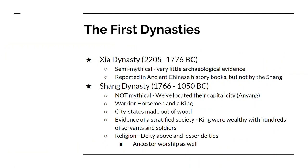Chinese history is typically told in dynasties, so I'm going to go over a couple of the major dynasties. The first is the Xia, and the Xia are traditionally dated from 2205 to 1776. They're semi-mythical — there's only a little bit of archaeological evidence to support them. They are reported in ancient Chinese history books, with mention of somebody named Yu the Great, but there's no record of the Xia in the Shang dynasty, who were their successors.